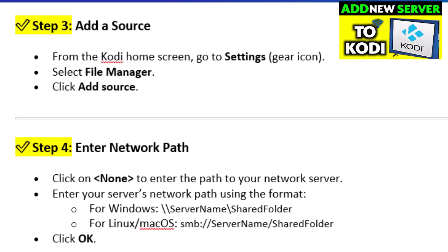Step 4: Enter the network path. Click on 'None' to enter the path to your network server. For Windows, use: \\servername\sharedfolder. For Linux or macOS, use: smb://servername/sharedfolder. Click OK.